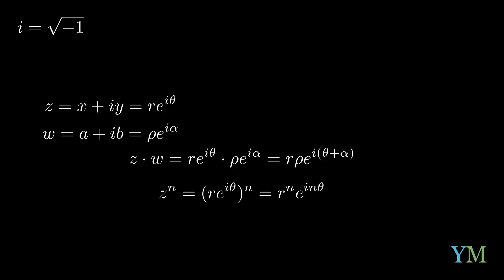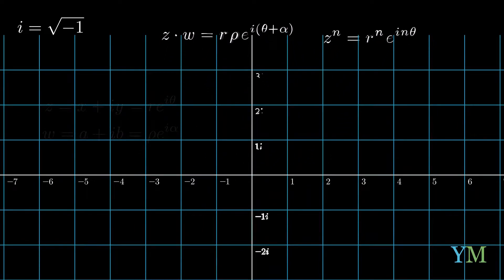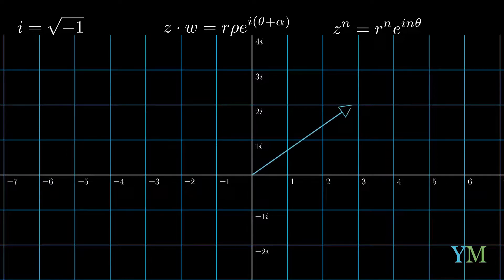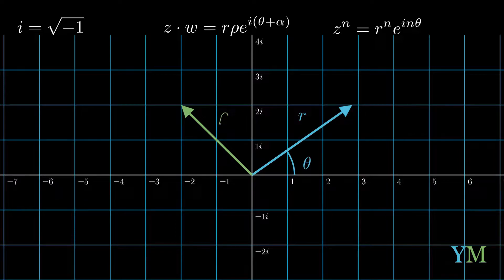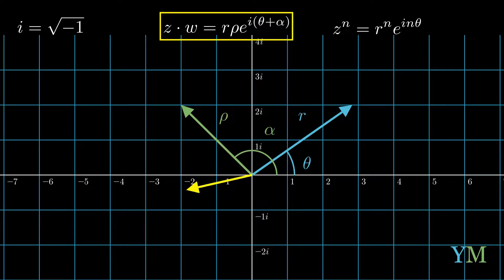Now it's time for us to understand what stands behind this and visualize the multiplication as well as z to the power of n. If we bring the Gauss plane and visualize z, we know that a complex number can be described by an arrow. That arrow has a length r, which is the size of the complex number, and an angle theta, which is its direction. Just like z, w can also be represented by an arrow with length rho and angle alpha. We want to visualize z times w, represented by a yellow arrow placed on the plane.